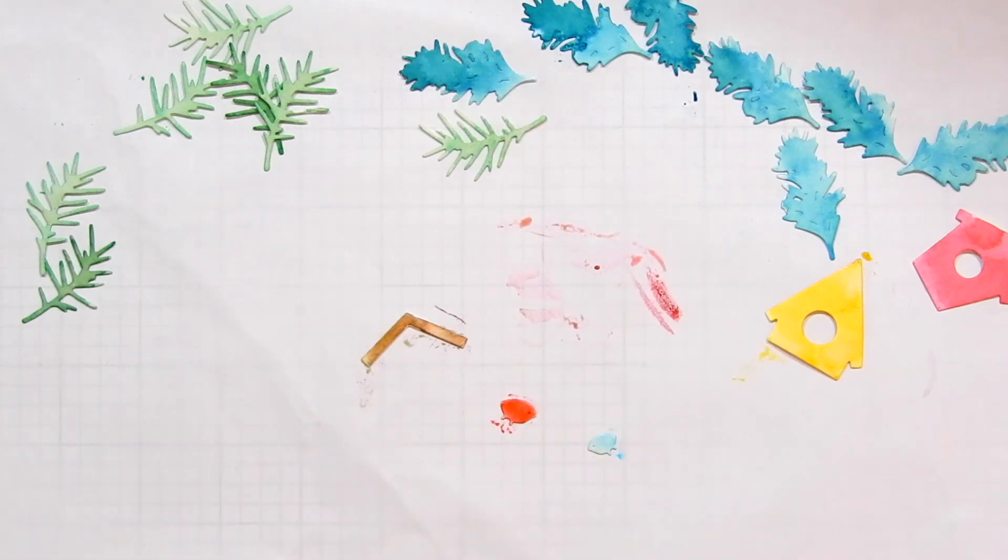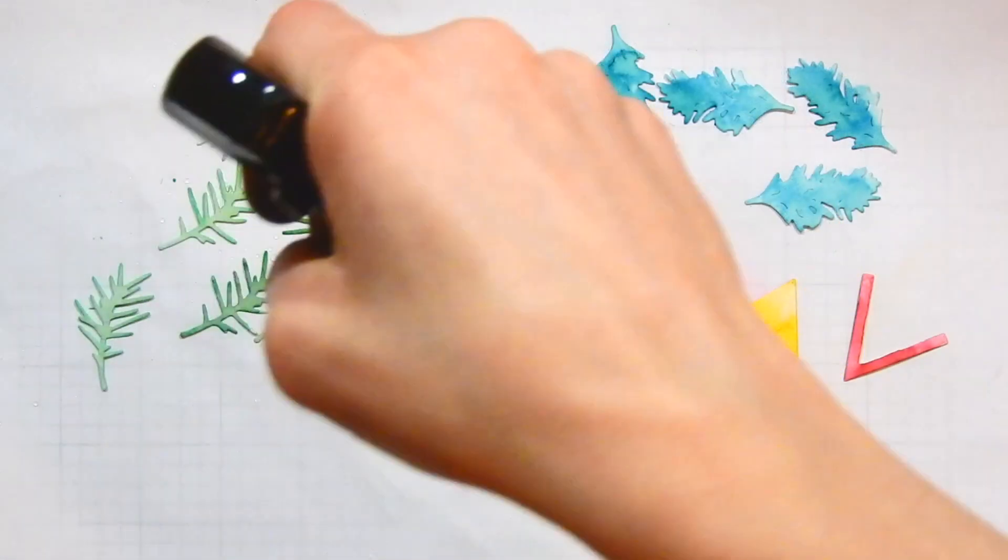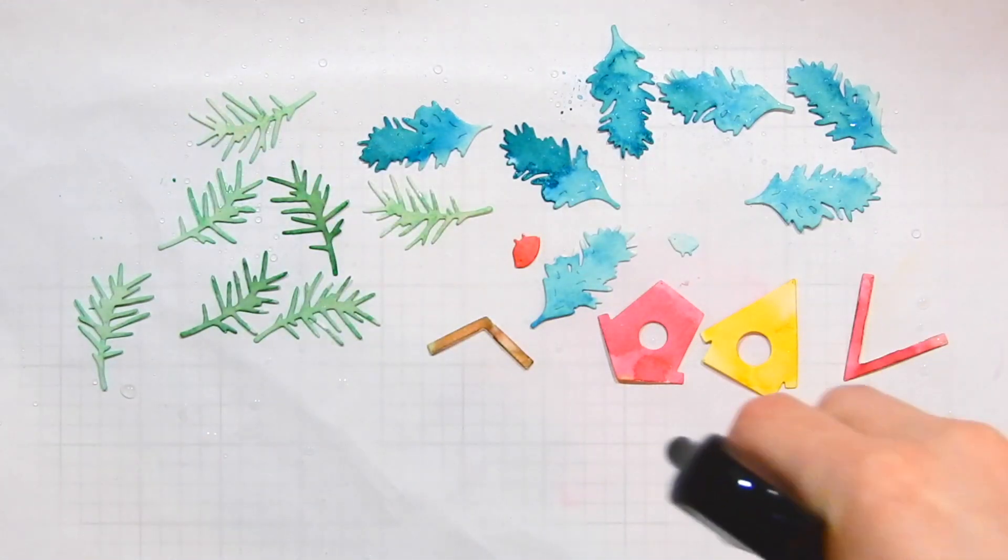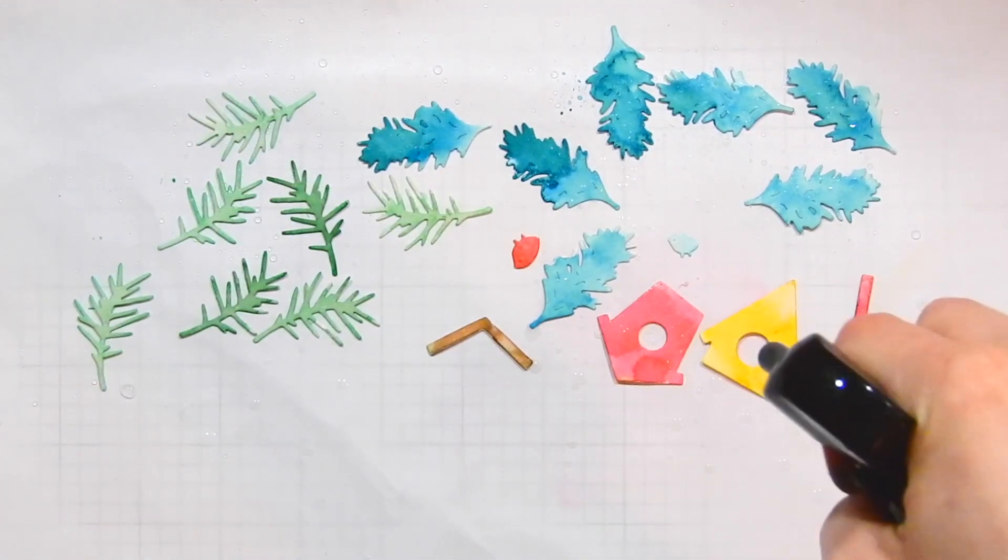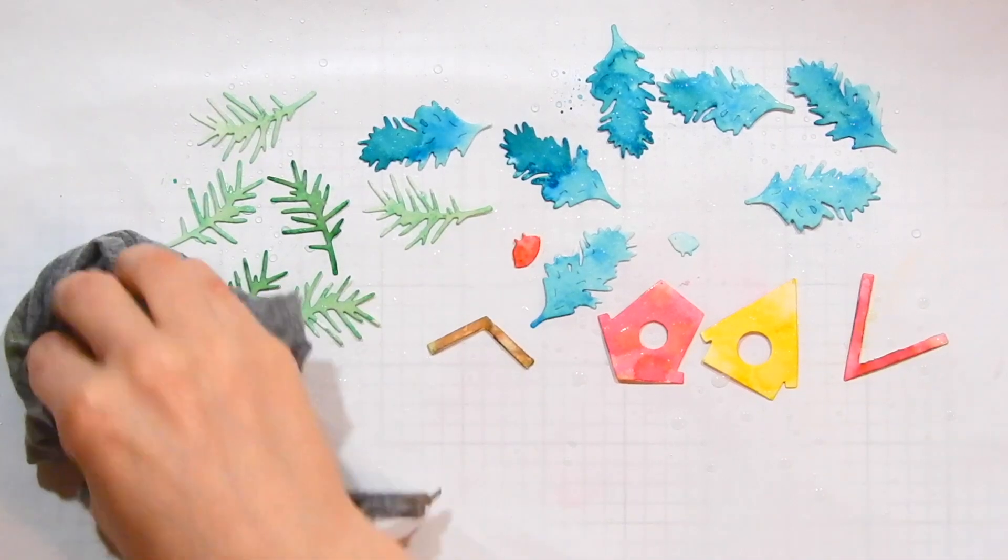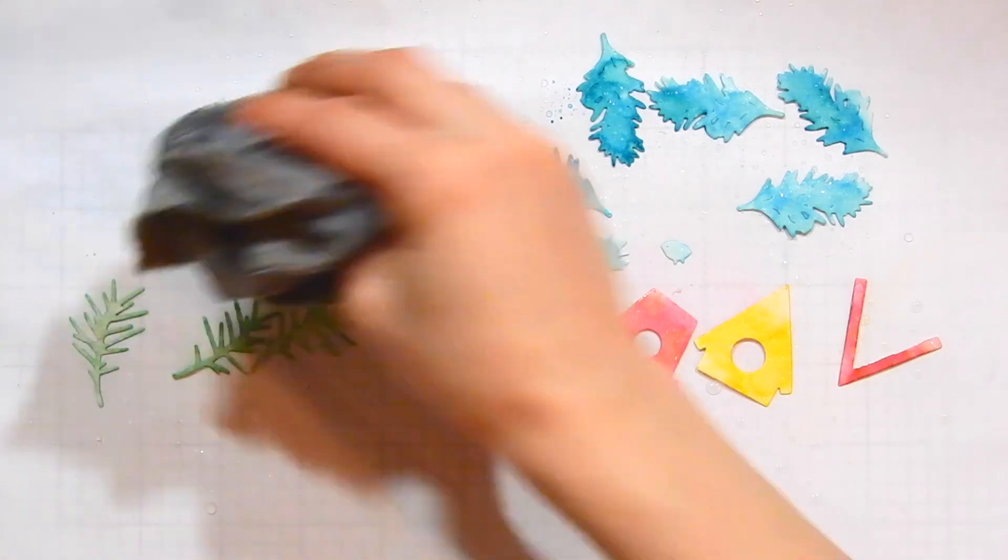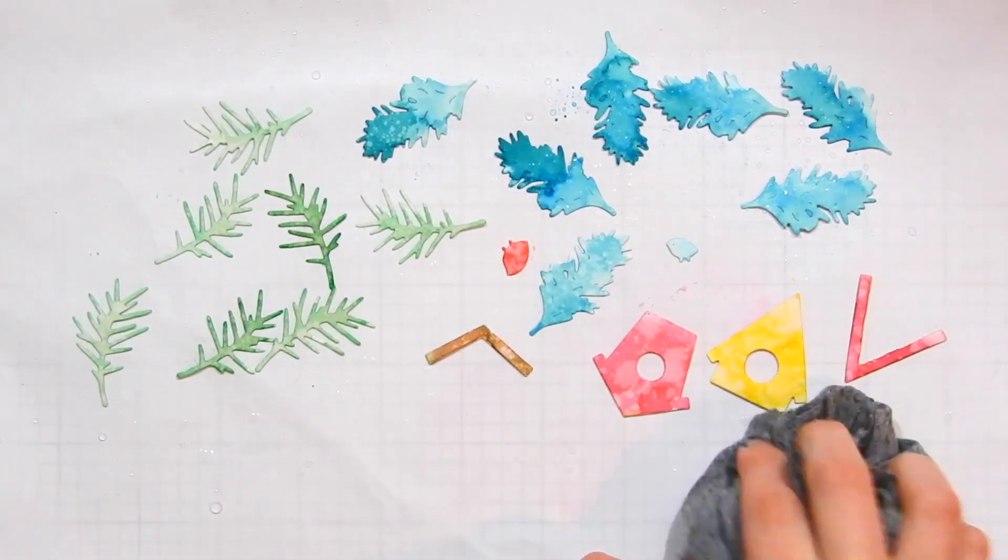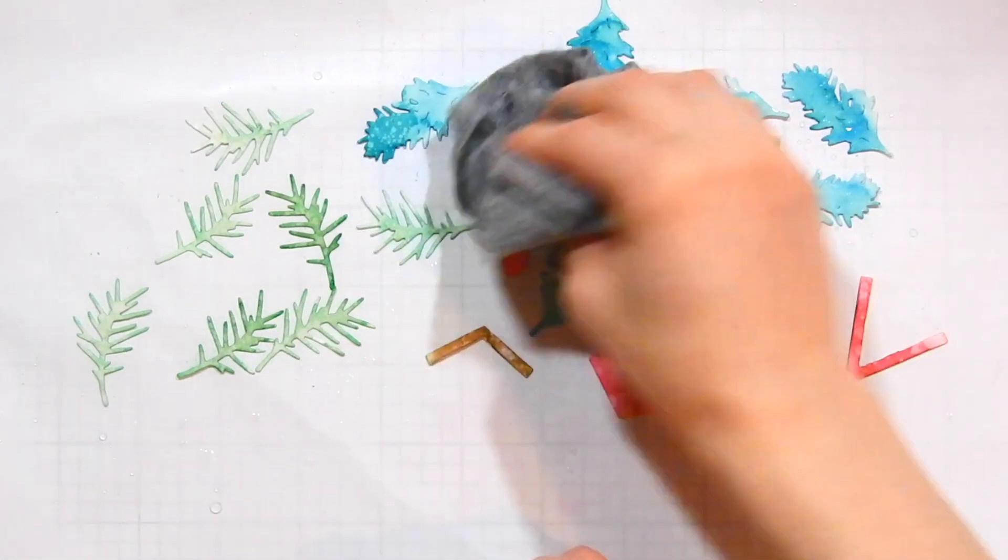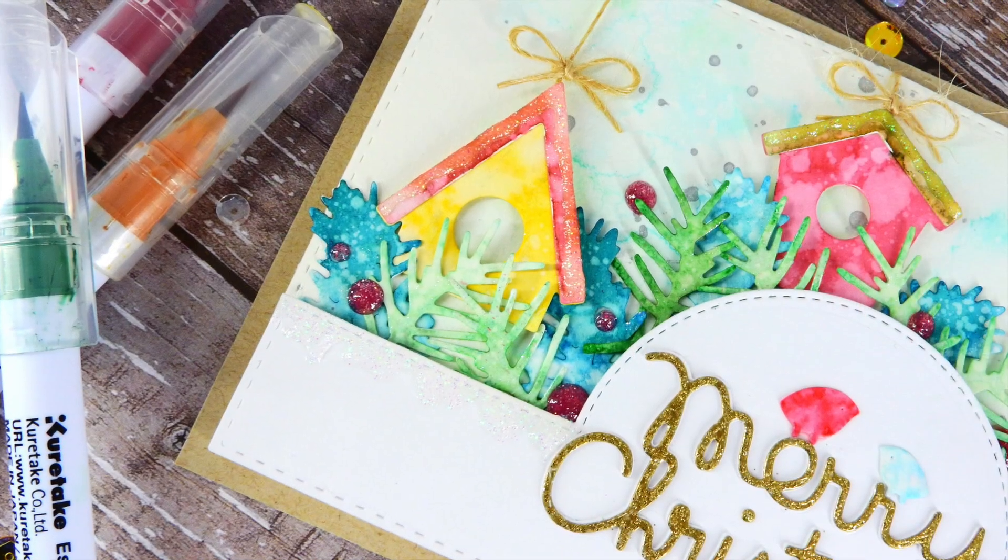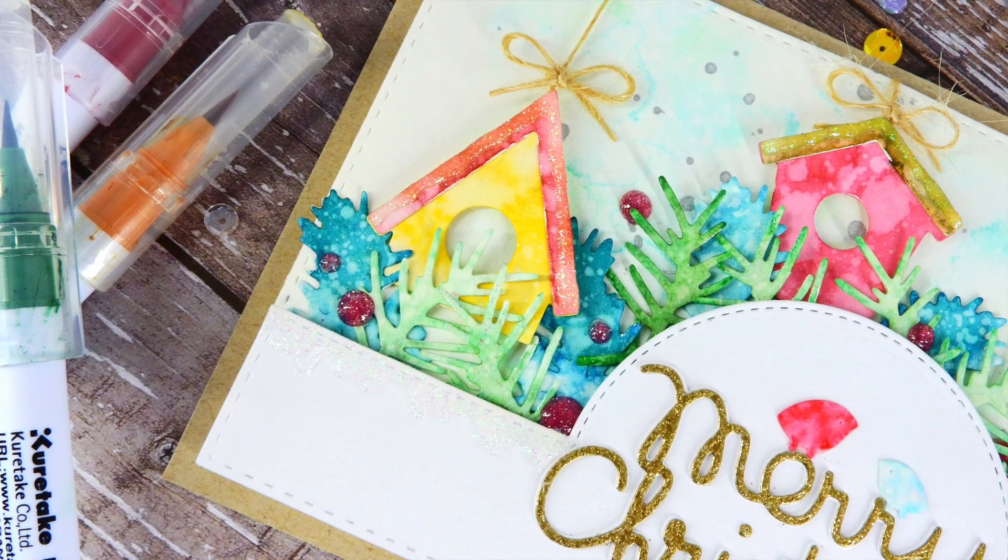Once I have all of my elements watercolored, it's time to take my distress sprayer. You can use any type of spray bottle to add water droplets, or you can even take a paintbrush and flick water onto your die cut pieces. I'm going to take a dry rag and dab up the water splatters just to get the color lifted off of these pieces and give a little bit of variation to the watercolor.